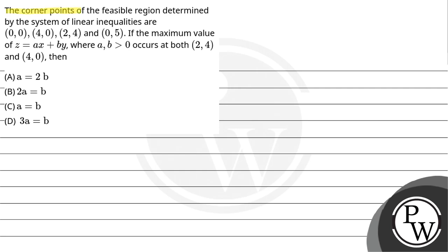Let's read the question. The corner points of the feasible region determined by the system of linear inequalities are (0,0), (4,0), (2,4), and (0,5). If the maximum value of Z equals AX plus BY, where A, B greater than 0, occurs at both (2,4) and (4,0), then: A is equal to 2B, B is equal to 2A, A equals to B, and 3A equals to B.